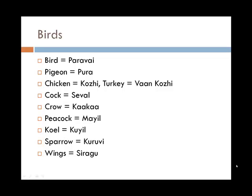Now for birds. Bird generally refers to paravai. Pigeon is pura. Chicken is kori, and a turkey would be vannkori. A cock is seval. A crow is kaka. A peacock is mail. A koel is quail. A sparrow is kuravi. And generally wings is siragal.